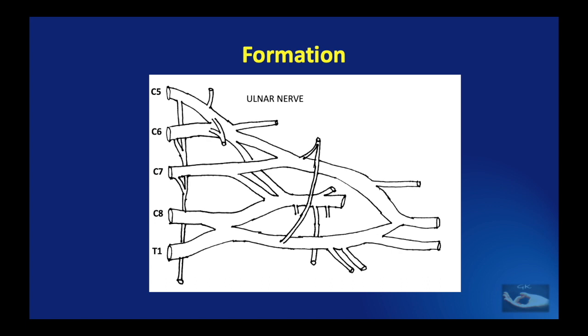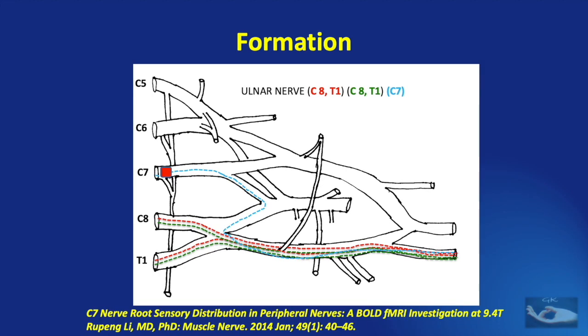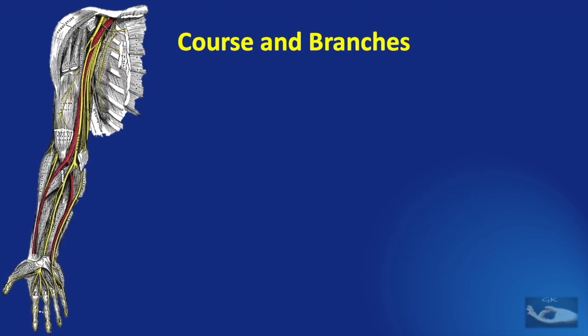The ulnar nerve is formed from the brachial plexus. It is one of the terminal branches of the medial cord, the other terminal branch being the medial root of the median nerve. The nerve fibers reaching the ulnar nerve are mainly from the C8 and T1 roots — the majority of both motor and sensory fibers arise from C8 and T1. Additionally, fibers from the C7 root travel along the posterior division of the middle trunk, then the posterior division of the lower trunk, reaching the anterior division of the lower trunk which continues as the medial cord, contributing up to 6% of the sensory fibers. This formation occurs in the region of the axilla.